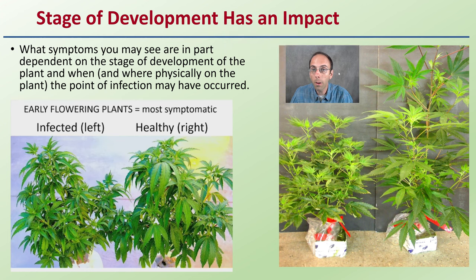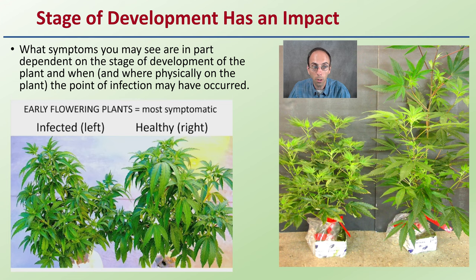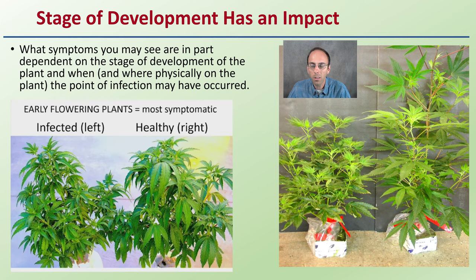Stage of development does have an impact. Keep in mind that the symptoms you may see are in part dependent on the stage of development of the plant, and also when and physically where on the plant the point of infection may have occurred. Early flowering plants can tend to be the most symptomatic — plants going into flower is where you tend to get that. You can see here the stunting that occurs, different changes in morphology — all things that just don't quite look right.